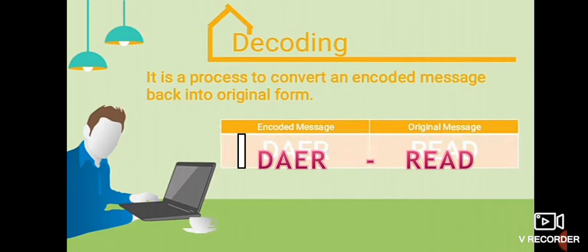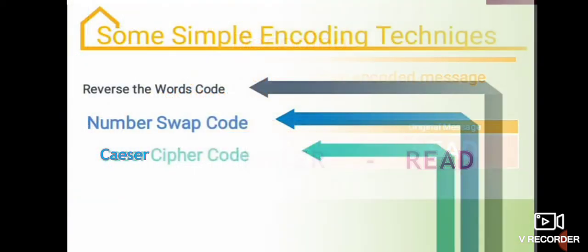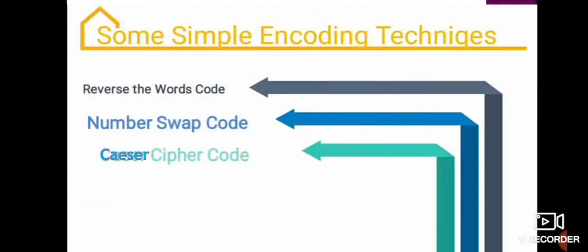Decoding. It is a process to convert an encoded message back into original form. See here, the encoded message is D-A-E-R and the original message is R-E-A-D. So, the bringing back to the original message is decoding. This helps us to understand its true hidden meaning. Now, have a look on some simple encoding techniques. First is reverse the words code. Second is number swap code. Third is Caesar Cipher code.